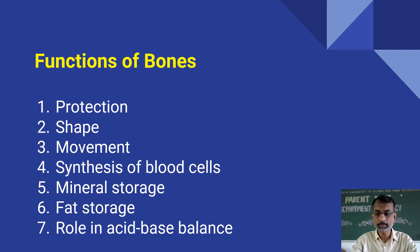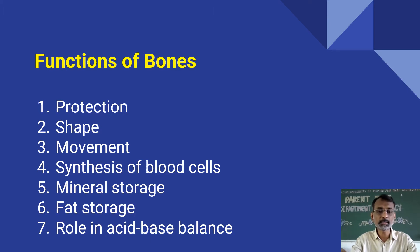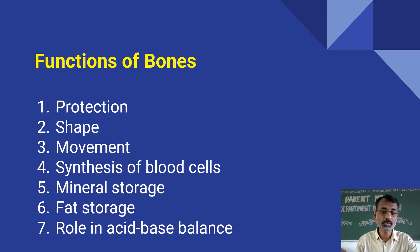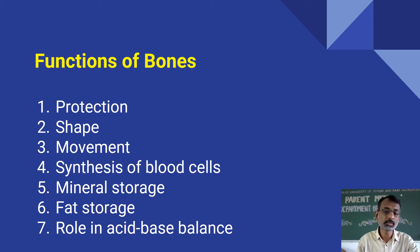Then there is the synthesis of blood cells. Both RBCs and WBCs as well as platelets are synthesized by the bone marrow which is present inside the bones, particularly in the long bones. There are two types: red bone marrow, which synthesizes red blood cells and WBCs and platelets, and yellow bone marrow, which stores fat.